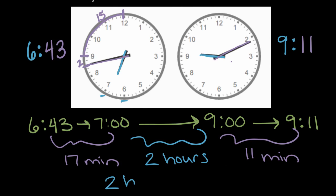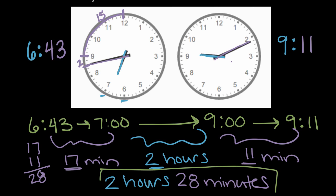And then we can combine our minutes: 17 and 11. That will be eight ones, and 10 plus 10 is 20, so 28 minutes. It takes two hours and 28 minutes for the clock to go from 6:43, the time on the left, until 9:11, the time on the right.